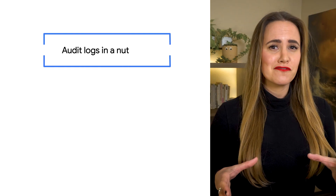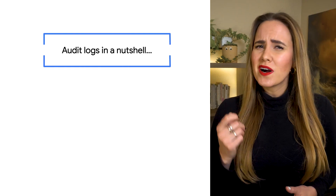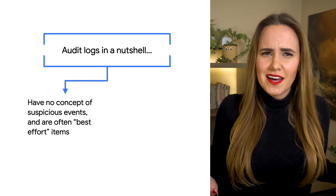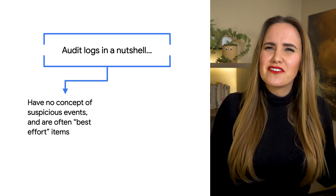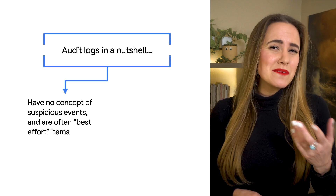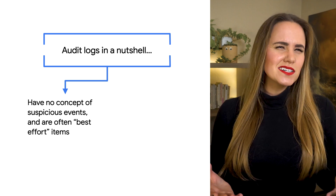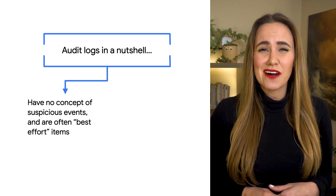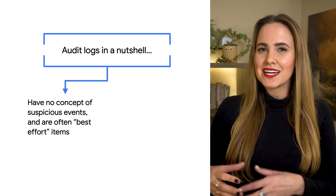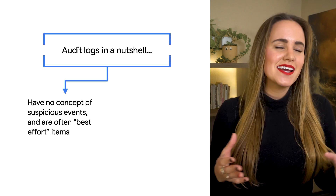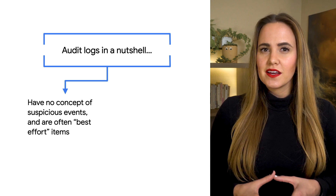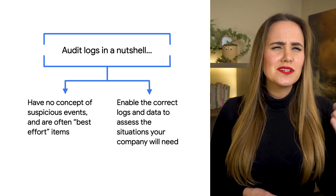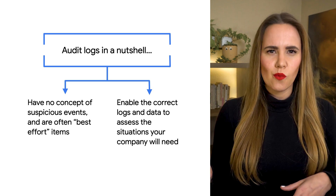We've got a lot of log information to sort through, but it's important to understand that audit logs have no concept of suspicious events and are often best-effort items that can be delayed by up to five minutes. Once your security team is aware of a suspicious event, your team will need the correct tools and data to assess the situation and take action as appropriate. Luckily, in our case, we'd turned on data access logs, so let's look at those and see who's been calling what and when.